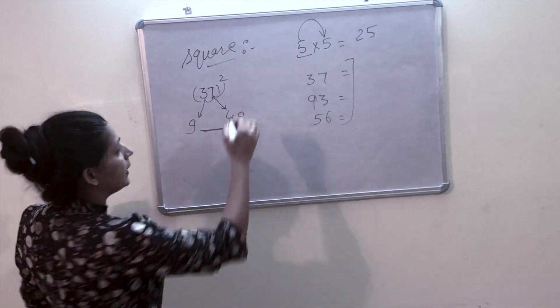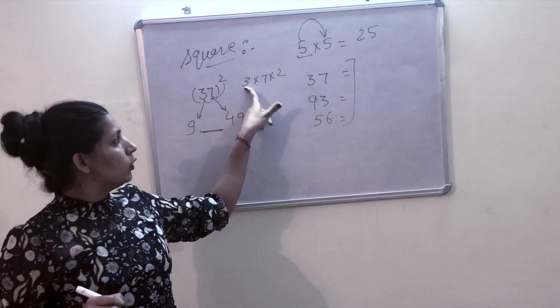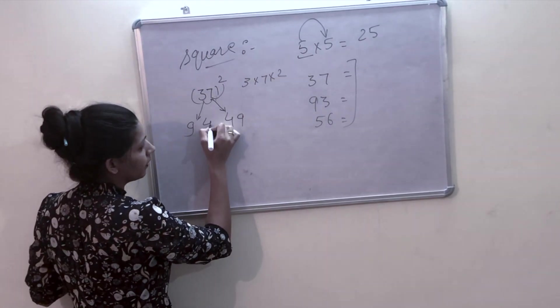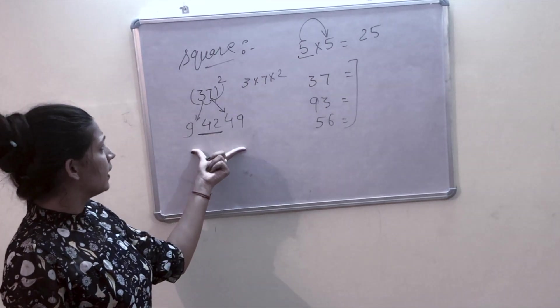So 3 multiply 7 and multiply 2. 3 times 7 is 21, and 21 times 2 is 42.